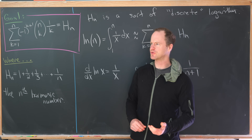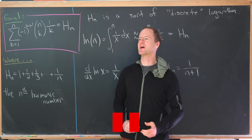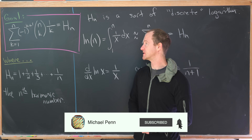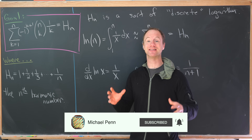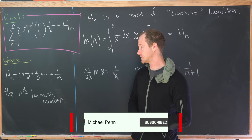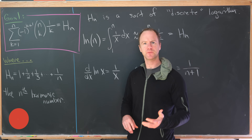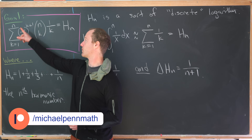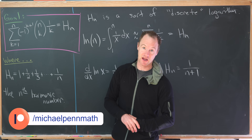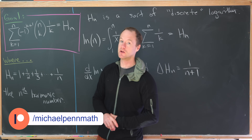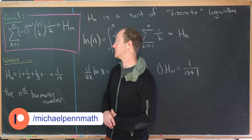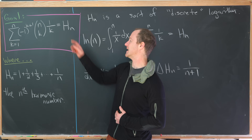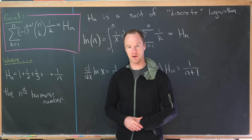Today we're going to look at an expression related to one of my favorite number sequences — the harmonic numbers. In particular, we'll show that the sum as k goes from 1 to n of (-1)^(k+1) times the binomial coefficient n choose k times 1/k is the nth harmonic number.